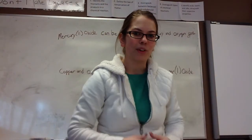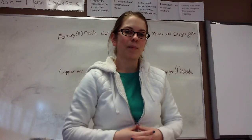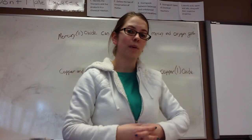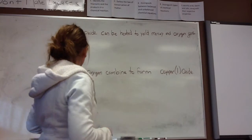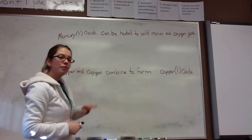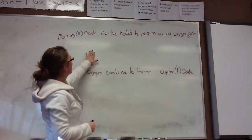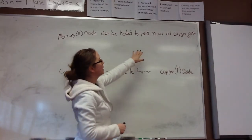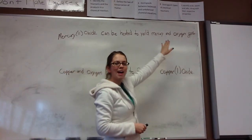Before we can balance the chemical equation, we need to have the chemical equation written out in the form of symbols. The first one says, mercury oxide can be heated to yield mercury and oxygen gas.